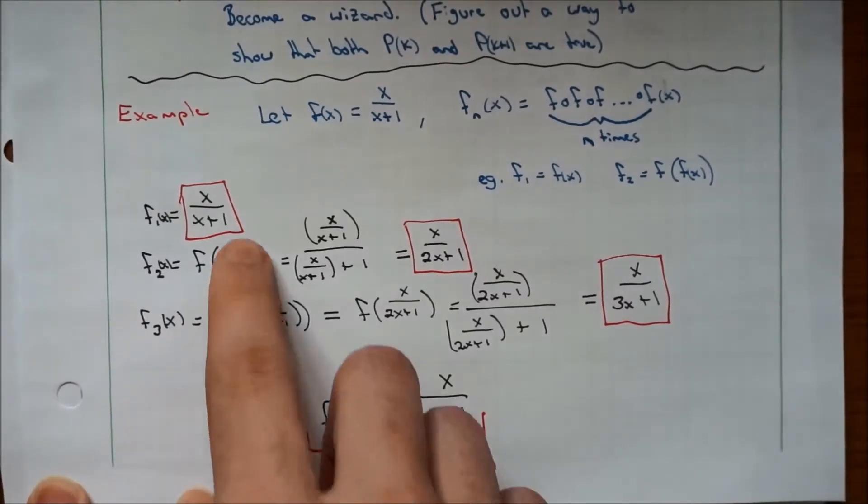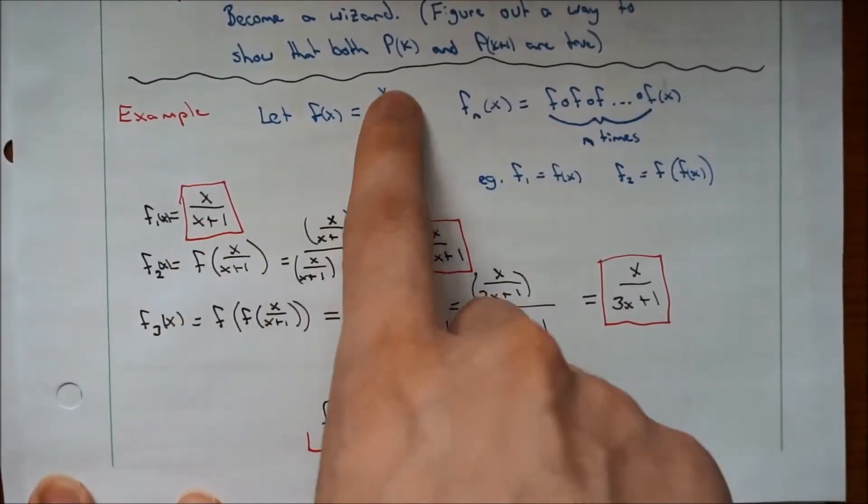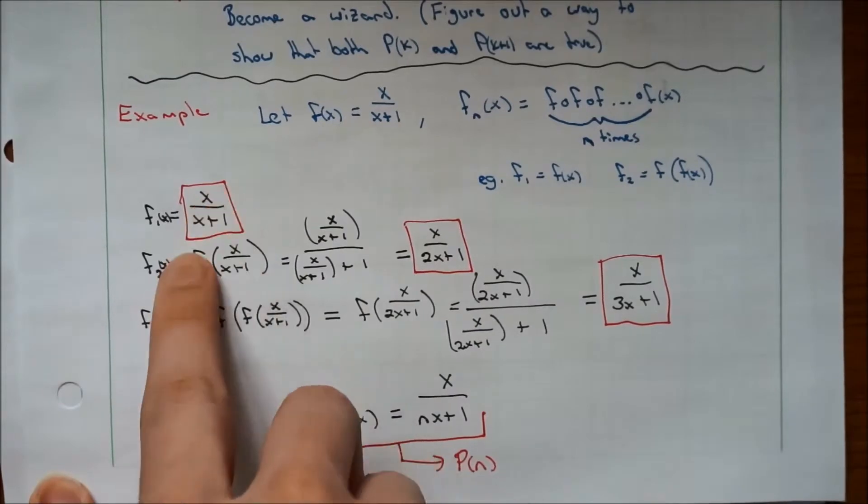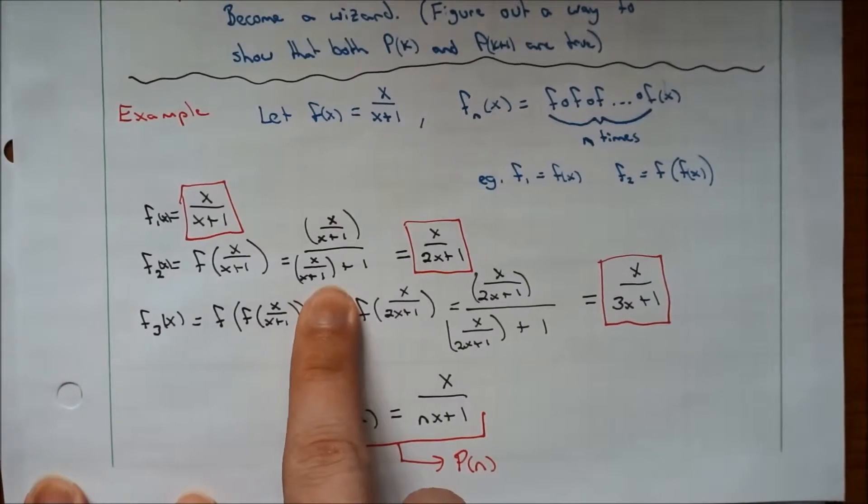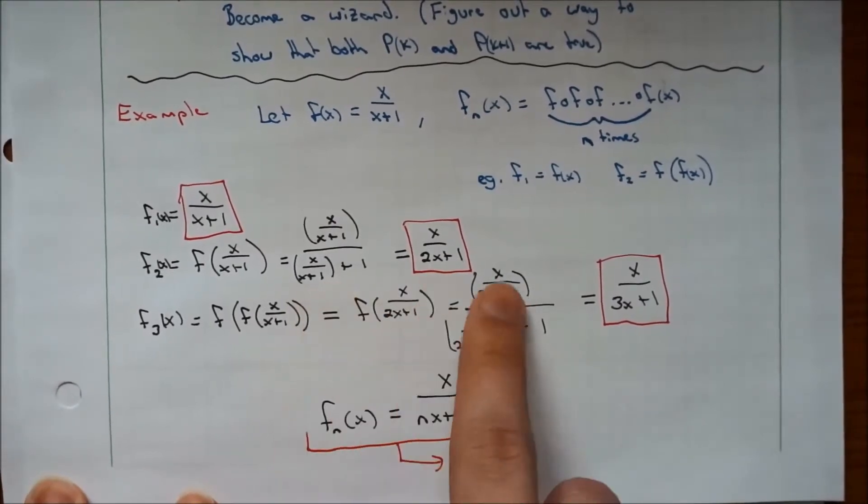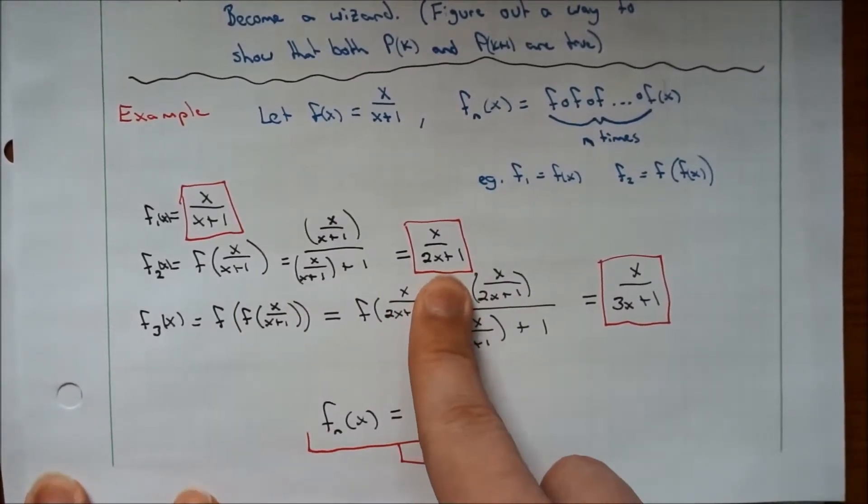f_2(x), we're going to plug this into itself. So anywhere here you see an x, you're going to replace it with x/(x+1). So it looks like this. And if you just work that out and simplify it, you get x/(2x+1).